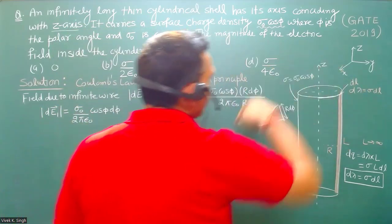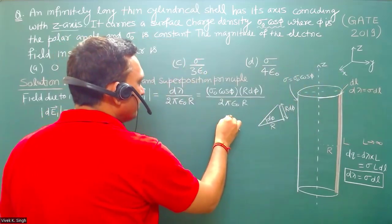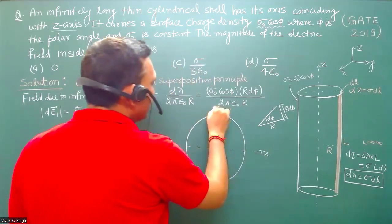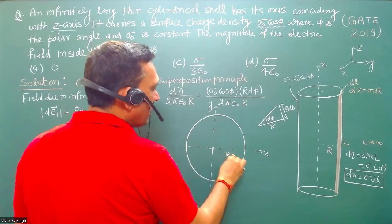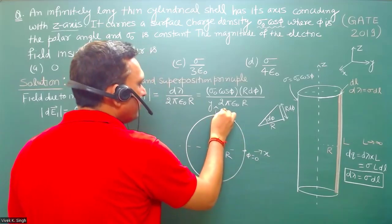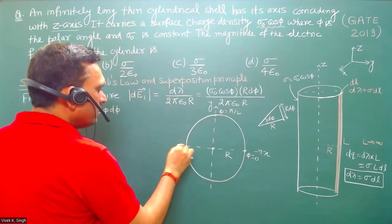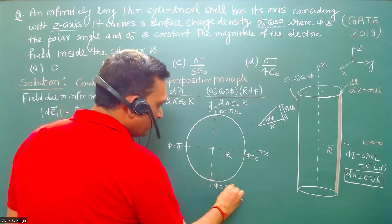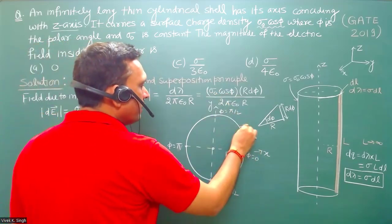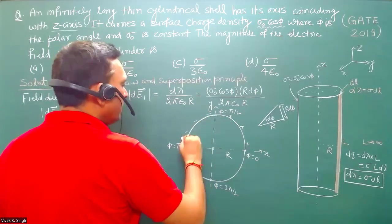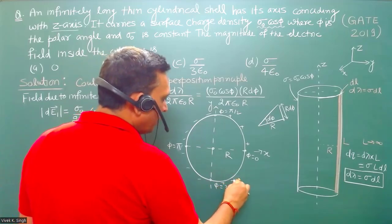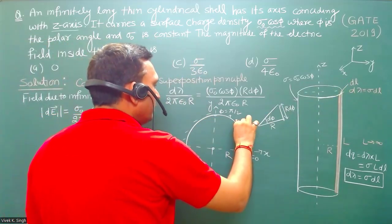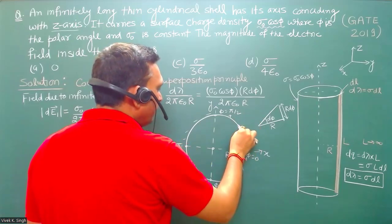Looking at the circular cross-section, we draw it with x and y axes, radius r. At φ = 0 we are on the positive x-axis, φ = π/2 is the positive y-direction, and φ = 3π/2 is the negative y-direction. The cos(φ) value is positive in the first and fourth quadrants, and negative in the second and third quadrants. We consider an elemental length dl in one segment and find the direction of the resulting field.